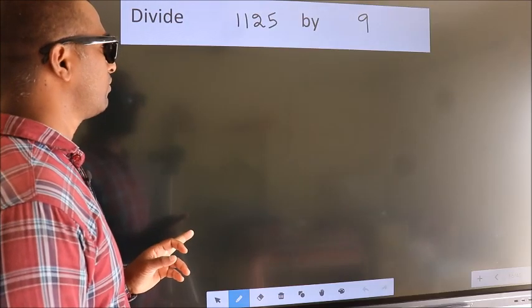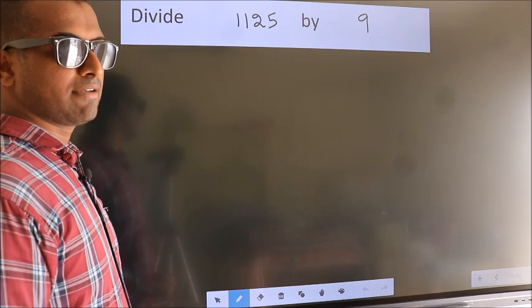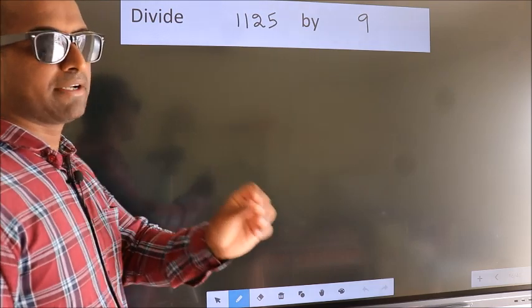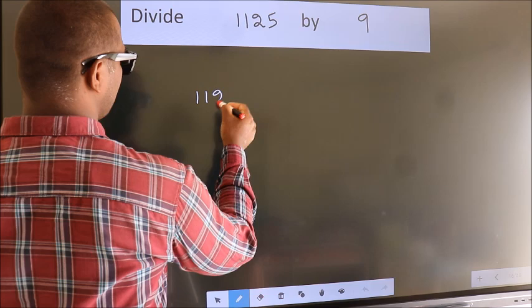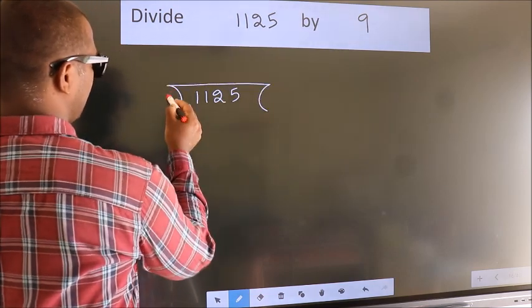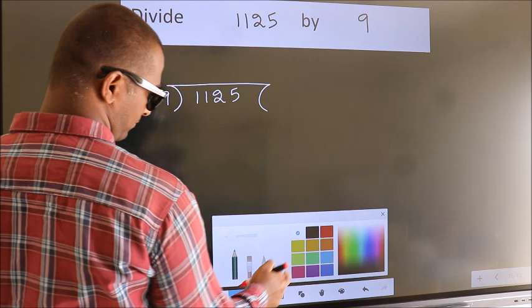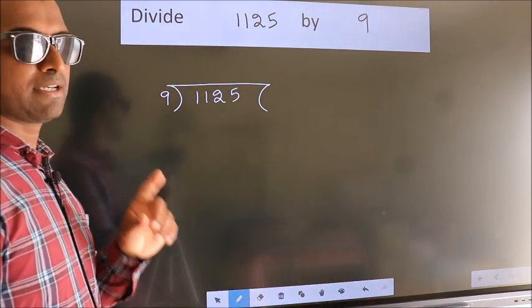Divide 1125 by 9. To do this division, we should frame it in this way. 1125 here, 9 here. This is your step 1.